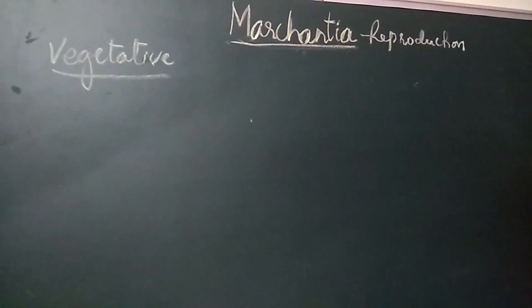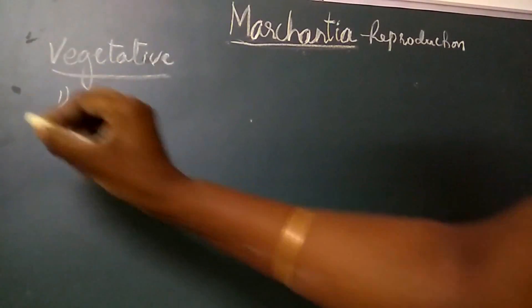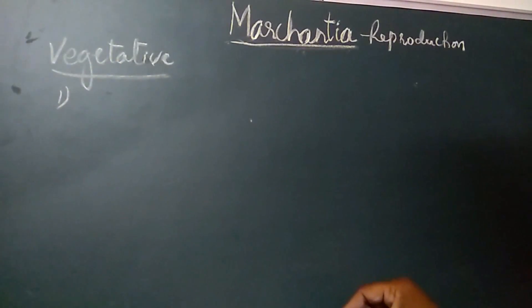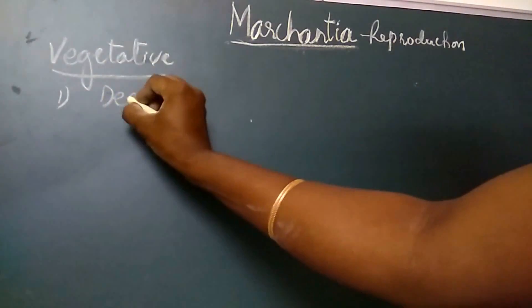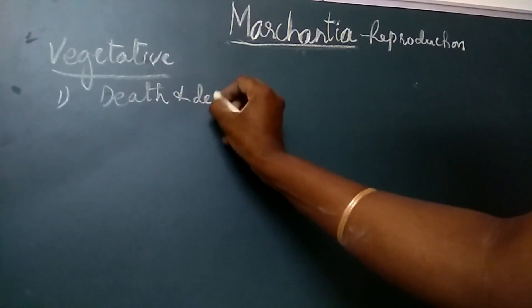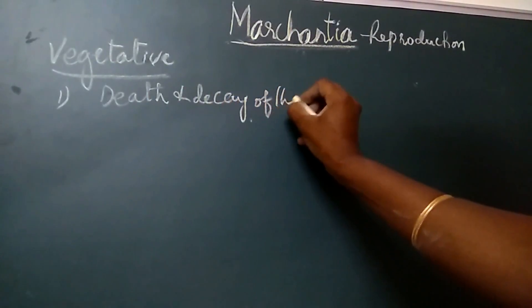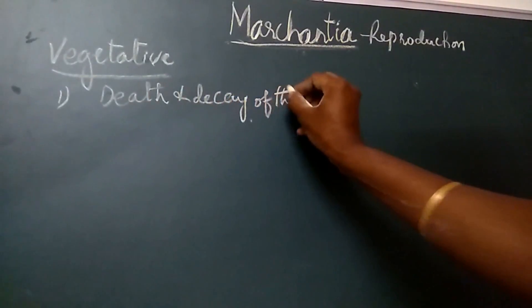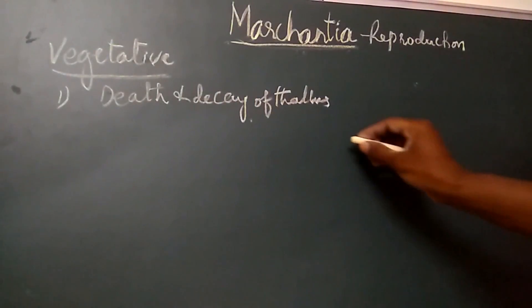Vegetative reproduction takes place regularly by the following methods. The first one is by the progressive death and decay of the thallus. The mature cells of gametophyte are short lived.